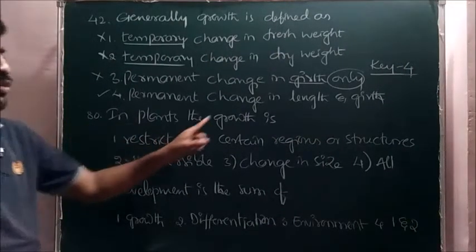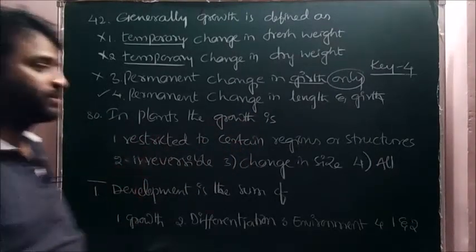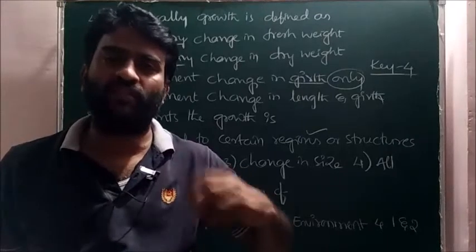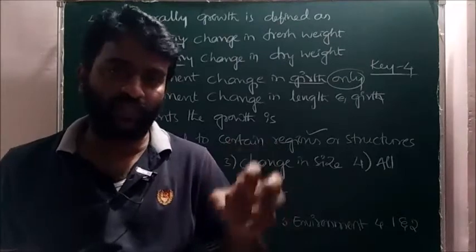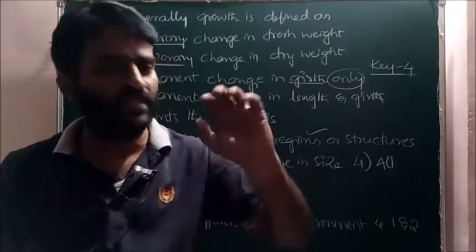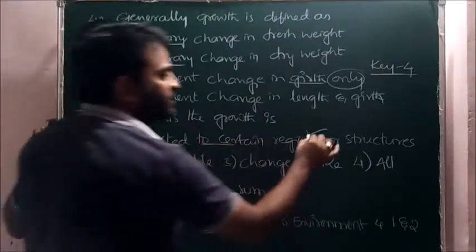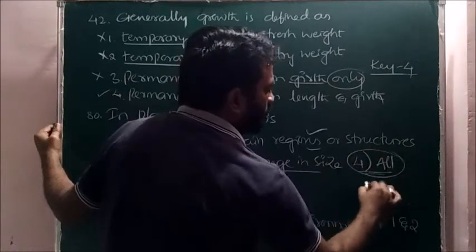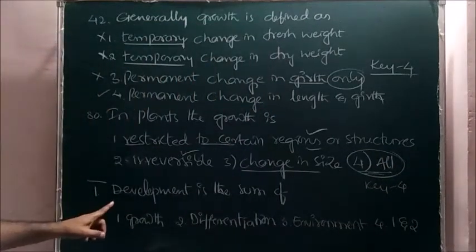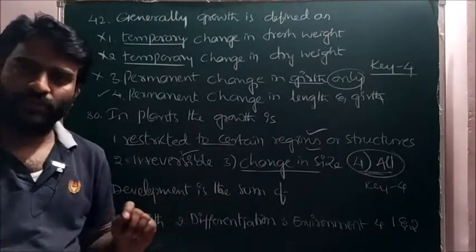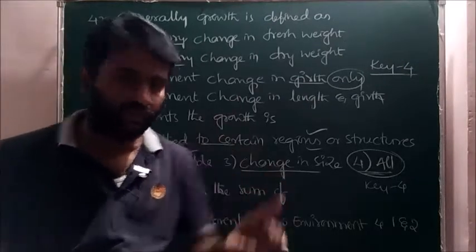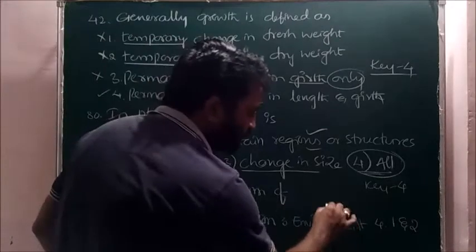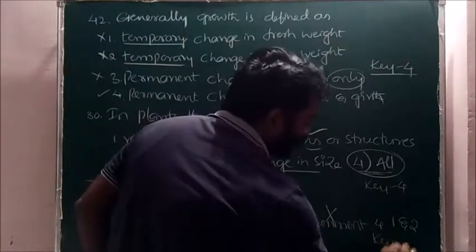Next from our material, 80th question: in plants the growth is restricted to certain regions or structures. Correct, only root and shoot tips grow. Wherever meristem or vascular tissues are present, vascular cambium, cork cambium, all these are present. In such regions where meristem are present, that region will grow, other regions will not grow. Restricted to certain regions, correct statement. Next, growth is reversible, correct. Change in size, correct. Additional questions: development is the sum of growth and differentiation together. It is direct textbook line. Environment is not applicable here, hence one and two, fourth option is correct. Answer for this question, key is four.